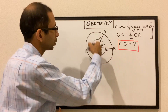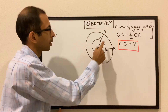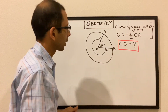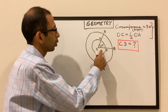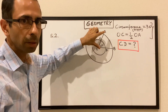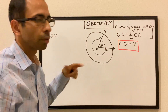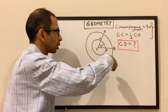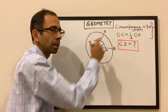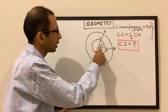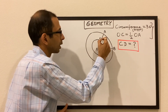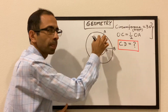We have 2 circles with the same center O. The circumference of the bigger circle is given to be 36 units, and OC is equal to half of OA — so the smaller radius is half of the bigger radius. These are the 2 pieces of information given: the circumference of the overall big circle, and the relation between the 2 radii. When this angle is 80 degrees, we have to find the length of arc CD.